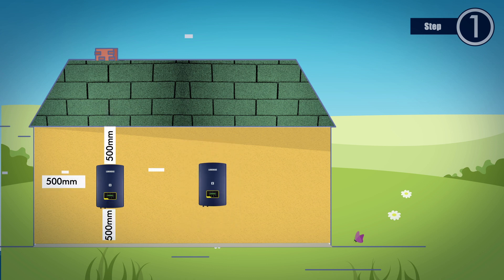If more than one inverter are to be installed together, a minimum of 500 mm clearance distance should be kept between the two inverters.